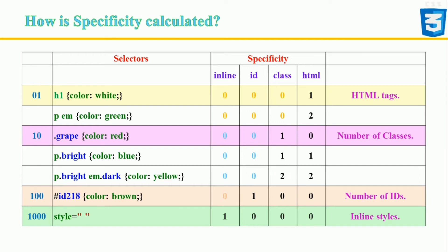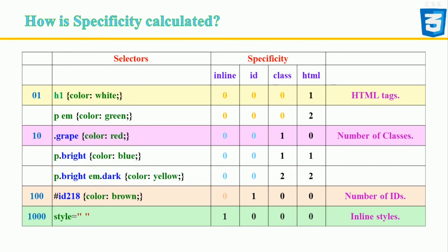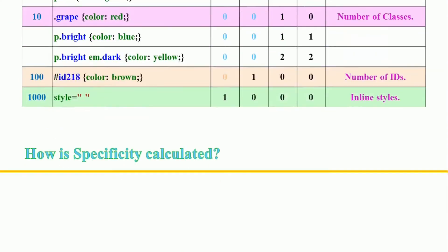Before calculating specificity, you need to be familiar with the types of CSS selectors. My technique is to sketch out a grid matrix and count each selector type, logging them in the appropriate column. You can double-check by summing the selectors — for example, a specificity value of 22 means there should be four selectors total. This technique is slow but helps you understand the concept behind CSS specificity.